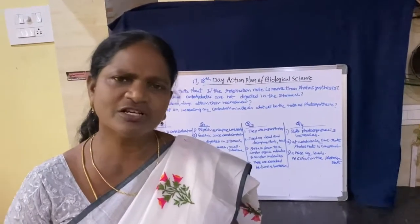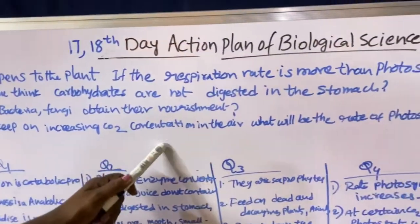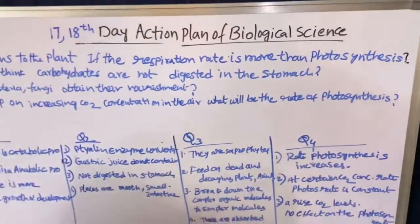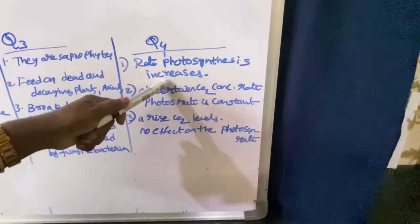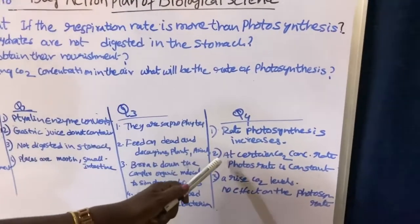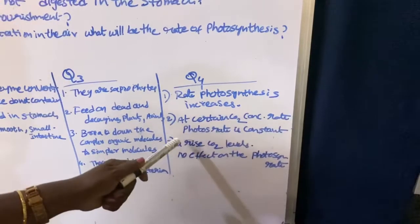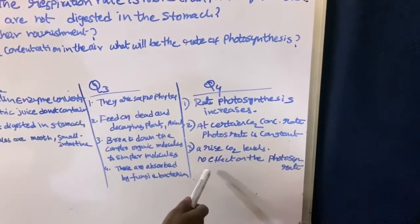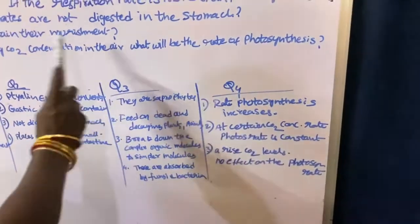Let us move on to the fourth question: If we keep on increasing CO2 concentration in the air, what will be the rate of photosynthesis? The answer is: the rate of photosynthesis increases if the CO2 concentration increases in the atmosphere. But at a certain stage, the CO2 concentration and the photosynthesis rate become constant, and a further rise in CO2 levels has no effect on the photosynthesis rate.